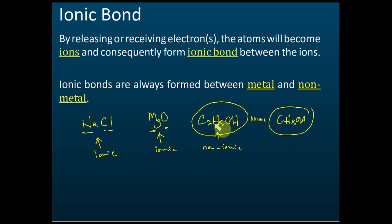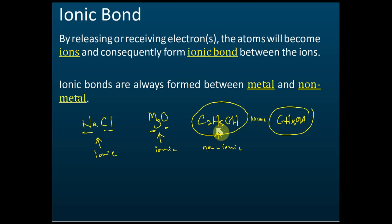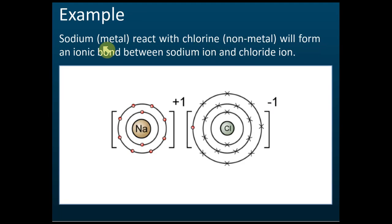Is C2H5OH a covalent compound? Yes. Non-metal with non-metal is covalent. Metal with non-metal is ionic; non-metal with non-metal is covalent. We don't have metal with metal as a chemical bond.